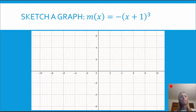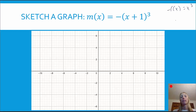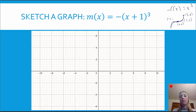Next up, m(x) equals negative (x plus 1) cubed. Our parent function here is the cubic function f(x) equals x cubed. This one doesn't have a vertex, but it does have a special point at (0, 0) where it shifts direction. Other key points are (1, 1), (2, 8), (-1, -1), and (-2, -8). I see this negative in front, which is going to reflect the function over the x-axis. Then the plus one within the function is moving the graph to the left one unit, so the special point moves from (0, 0) to (-1, 0).